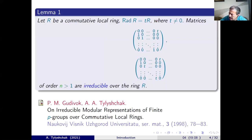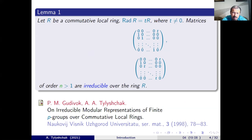During the investigation of modular matrix representations of finite groups over commutative local rings with Jacobson radical generated by one non-zero element T, together with my scientific supervisor Petro Divolker, we found two square matrices which are irreducible over this ring. These matrices were of any size, so the result was interesting for the construction of irreducible matrix representations.